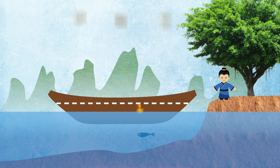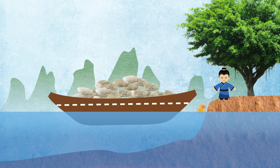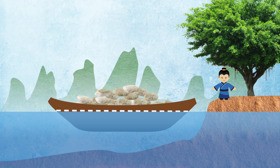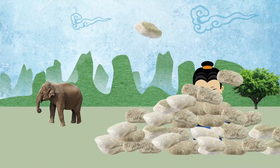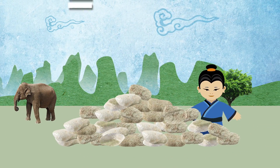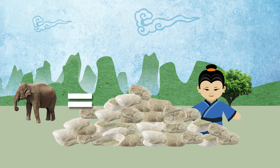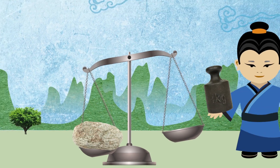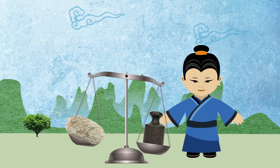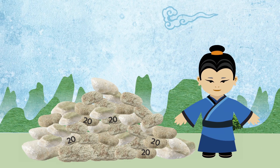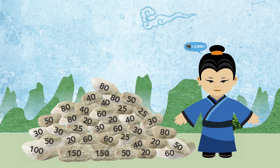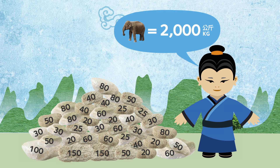How? Simple. By filling the boat with stones until the boat was submerged to roughly the same level. Next, he unloaded the stones. Logically, the stones were close to the same weight as the elephant. So all he had to do was calculate the weight of the stones. That's how little Chow Chow estimated the elephant's weight without even getting wet feet.